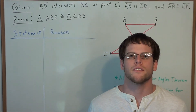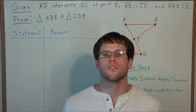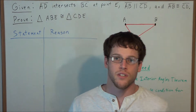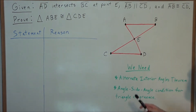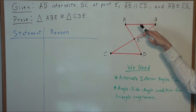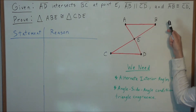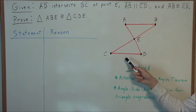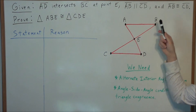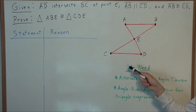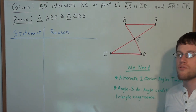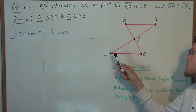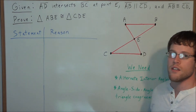Hi, my name is Vincent, and today I want to take a look at proving triangle congruency. So we have the problem: given AD intersects BC at point E, AB is parallel to CD, and AB is congruent to CD, we need to prove that triangle ABE is congruent to triangle CDE.